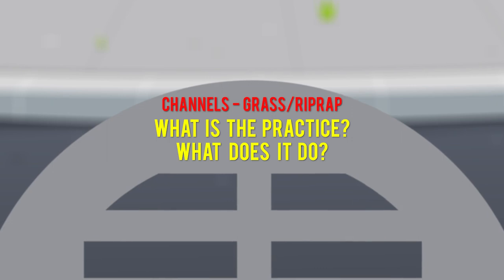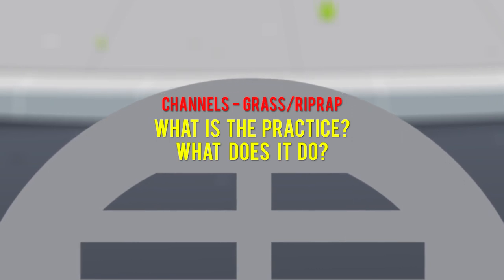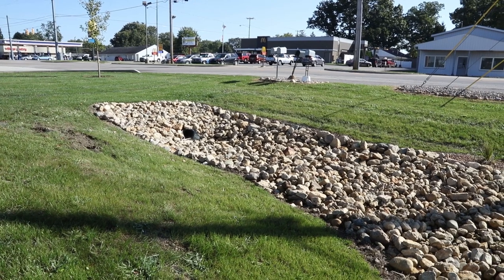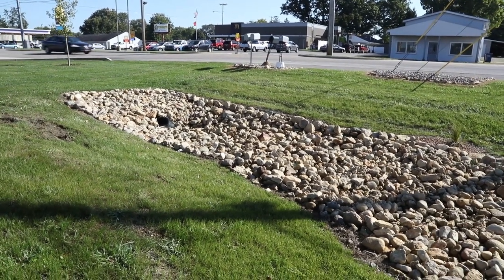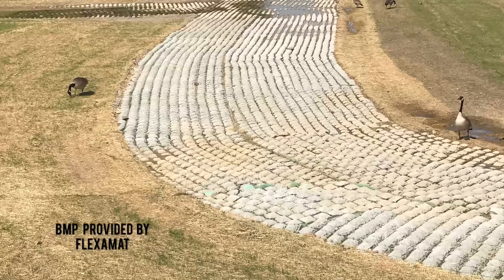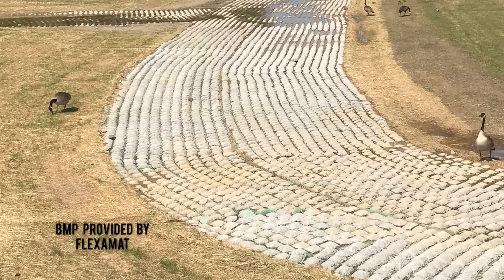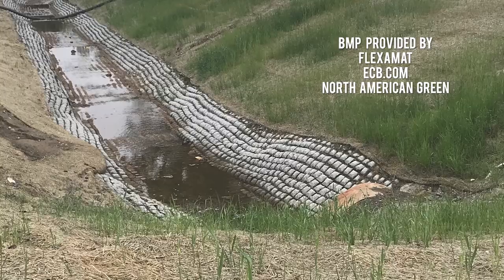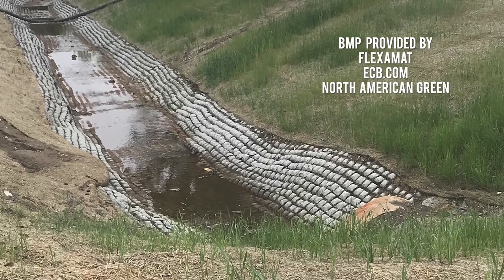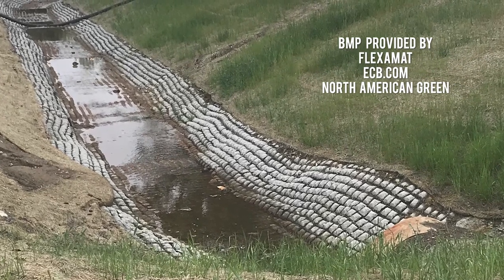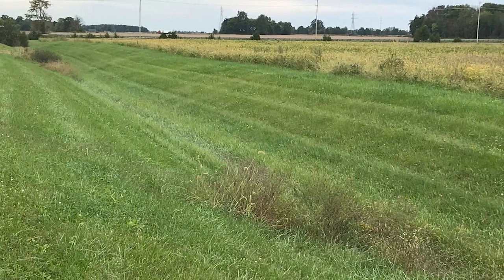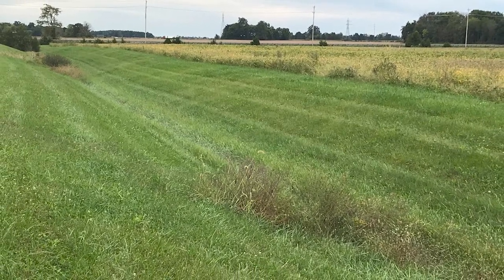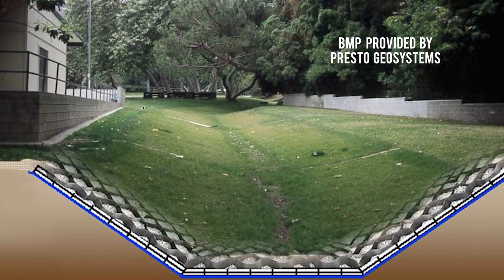Channels, grass and riprap lined. A grass or riprap lined channel is a storm water conveyance measure consisting of a natural or constructed channel shaped and graded to required dimensions, stabilized with either suitable vegetation or riprap, and used to convey water in a non-erosive manner. It carries concentrated storm water runoff from a small watershed area to a stable outlet without damage from erosion.